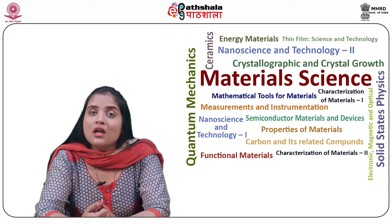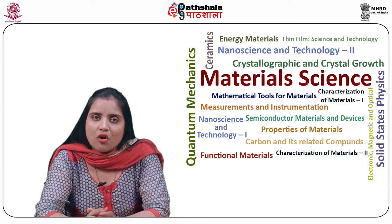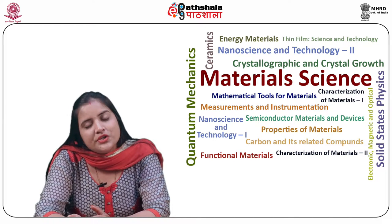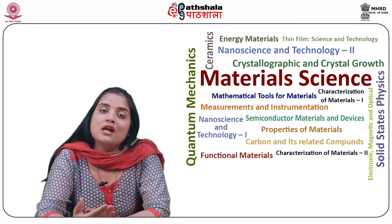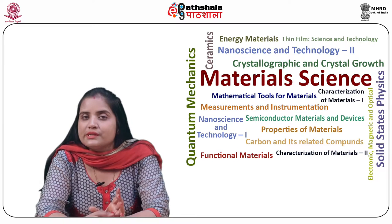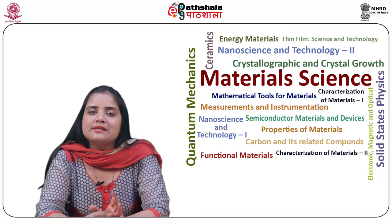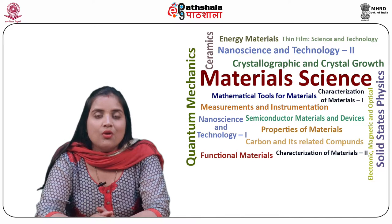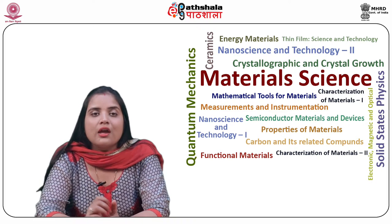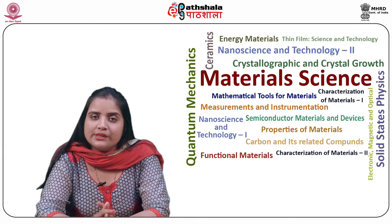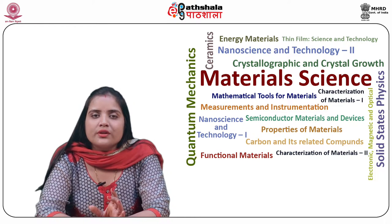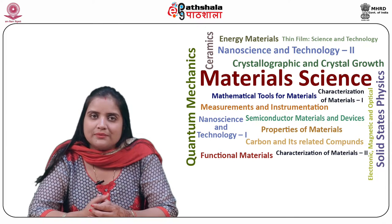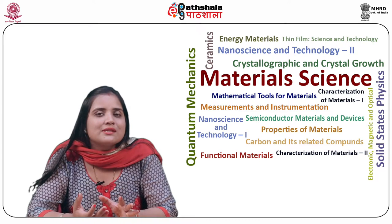Third generation cells include various thin film technologies and are the future generation photovoltaics. The majority of them are at experimental stage and are not commercially available. These cells use both organic, for example organometallic, as well as inorganic materials. Although at this stage they have poor absorption and low efficiencies, they are investigated for the potential of producing highly efficient and economic solar cells.